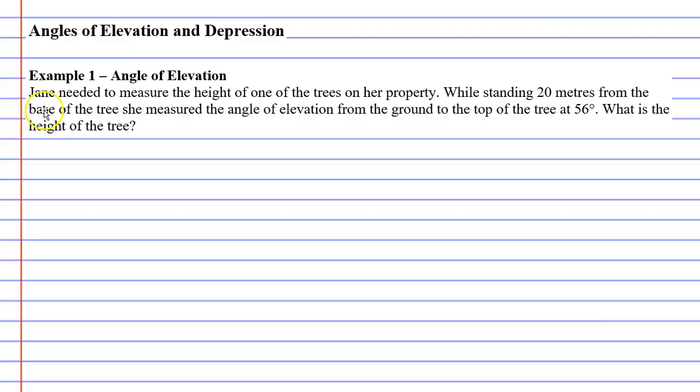So let's get into an example here. It says that Jane needed to measure the height of one of the trees on her property. While standing 20 metres from the base of the tree, she measured the angle of elevation from the ground to the top of the tree at 56 degrees. What is the height of the tree? So the first thing we need to do is we need to construct our triangle here. That's what we're going to focus on before we actually answer the question.